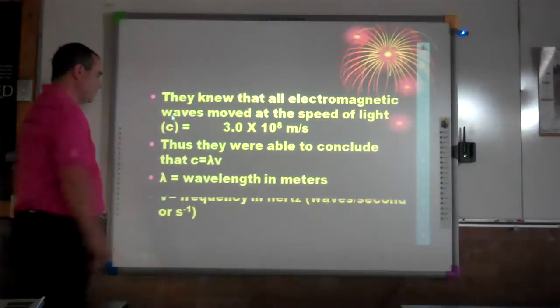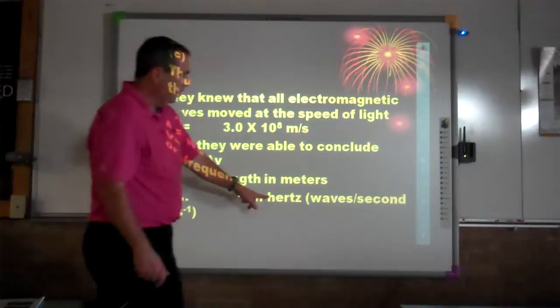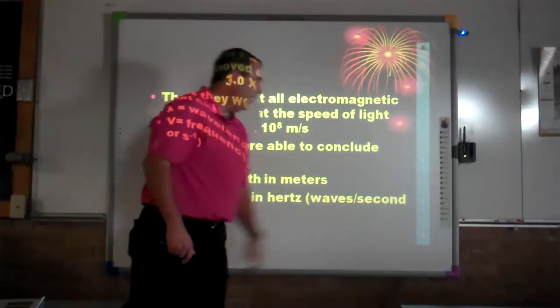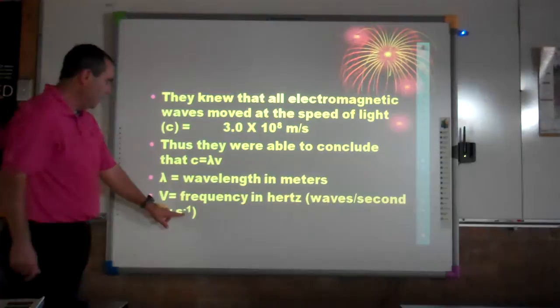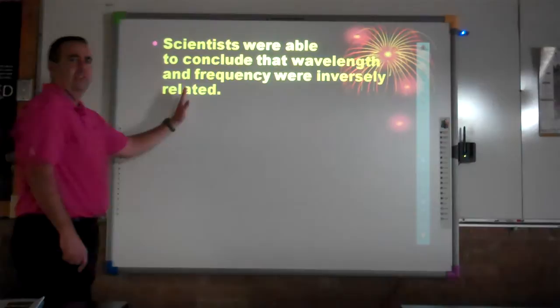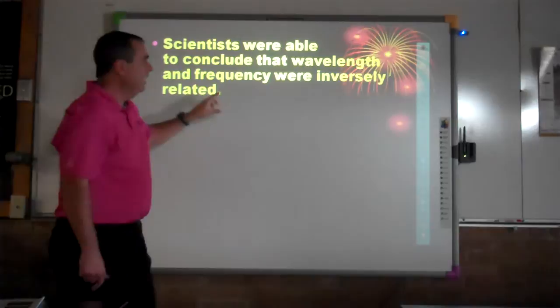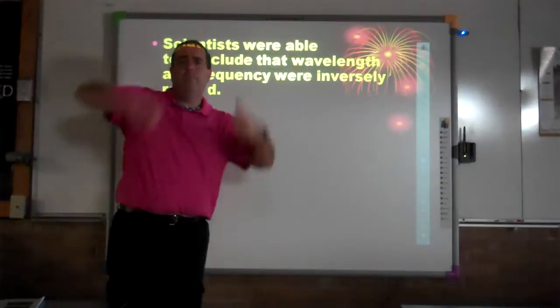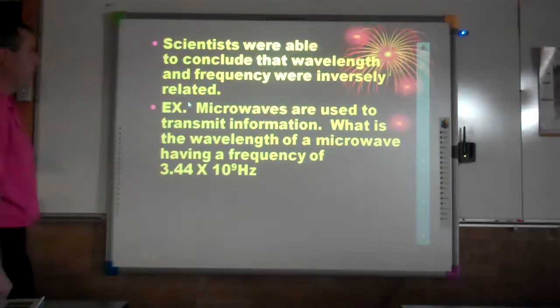Frequency is measured in hertz — that is waves per second, so 25 hertz means 25 waves per second. Notice that seconds is in the denominator, so we can also say it is 25 seconds to the negative one power. Since the speed of light is constant, wavelength and frequency are indirectly related: as one goes up, the other goes down to keep that same 3 × 10⁸ meters per second.